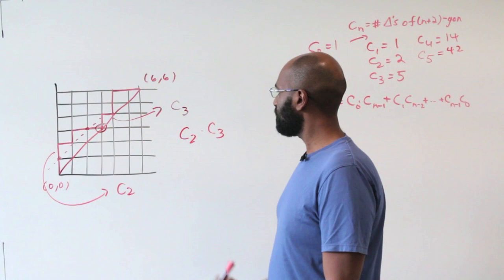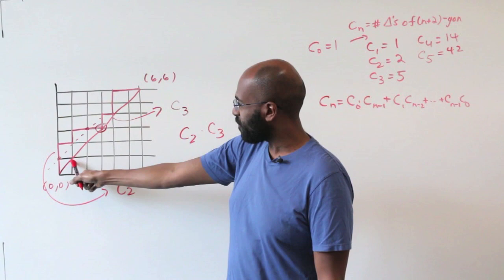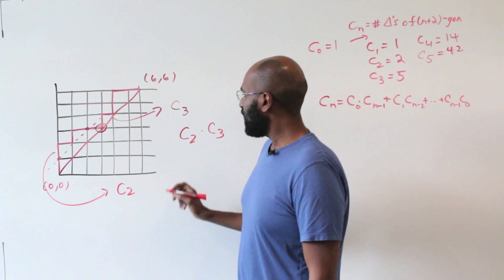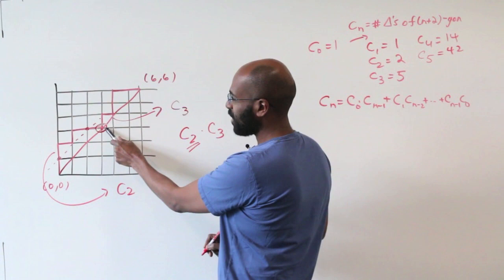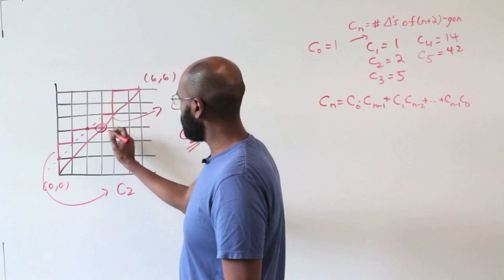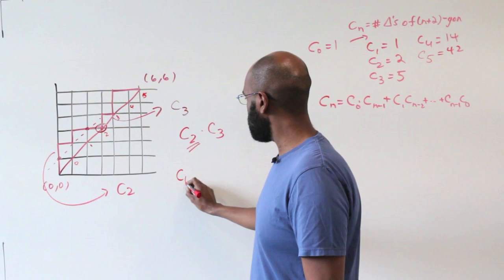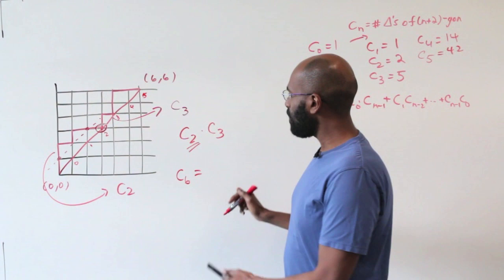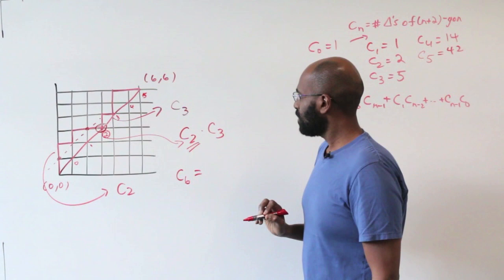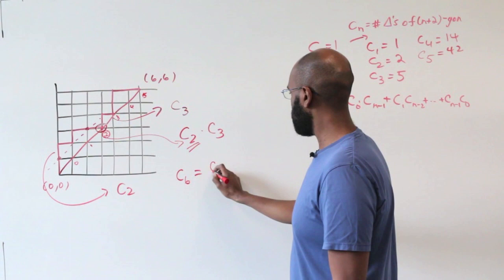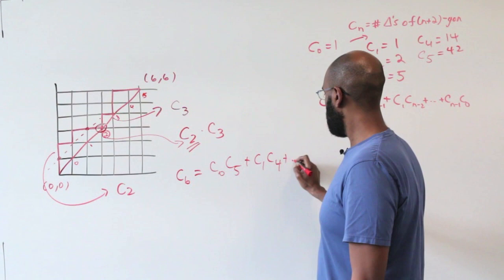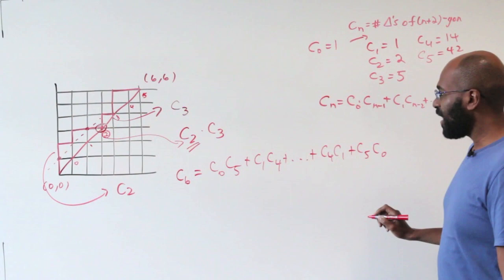This first-touch point could have moved anywhere along the diagonal — at positions corresponding to index values 0, 1, 2, 3, 4, or 5. So this index enumerates through all possible values. So C_6, the total number of paths from (0,0) to (6,6), is the sum of all these products: C_0·C_5 + C_1·C_4 + ... + C_4·C_1 + C_5·C_0. And that's exactly the same recursion we have for the triangulation problem.